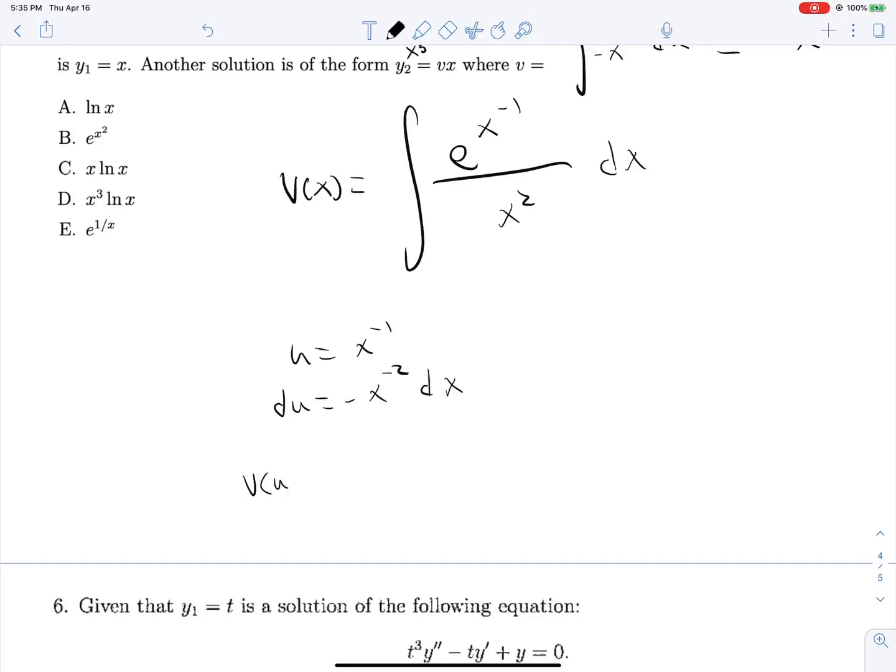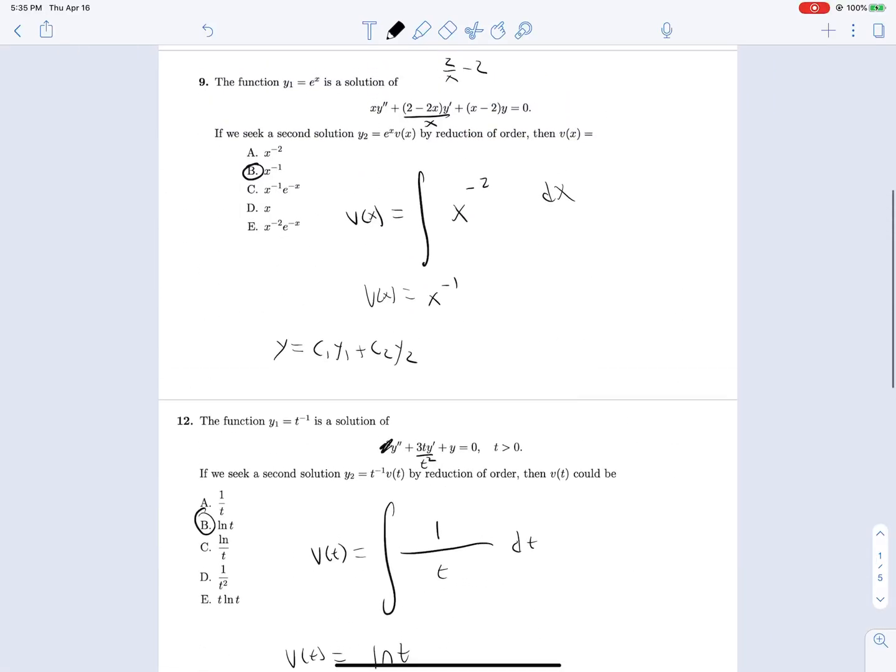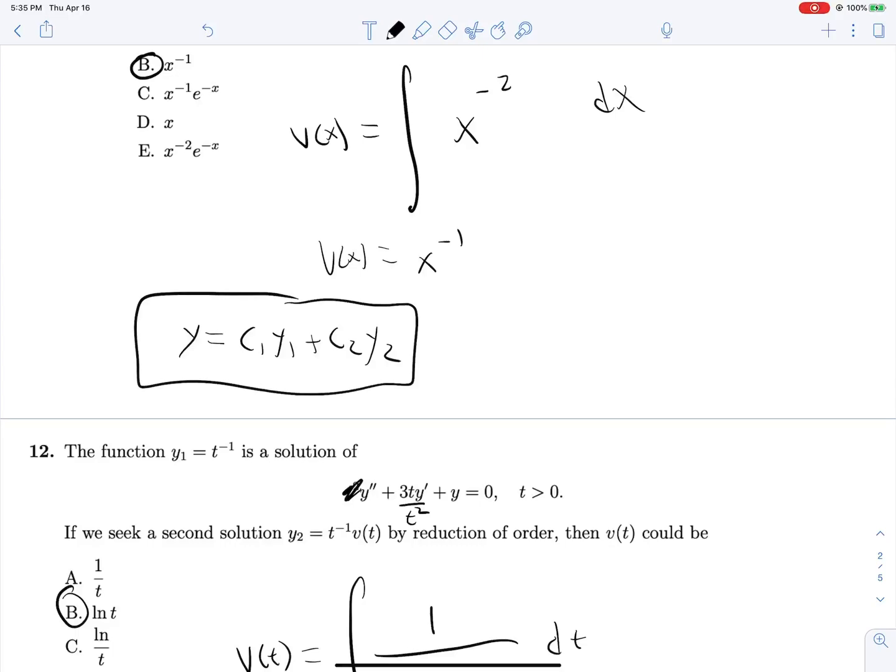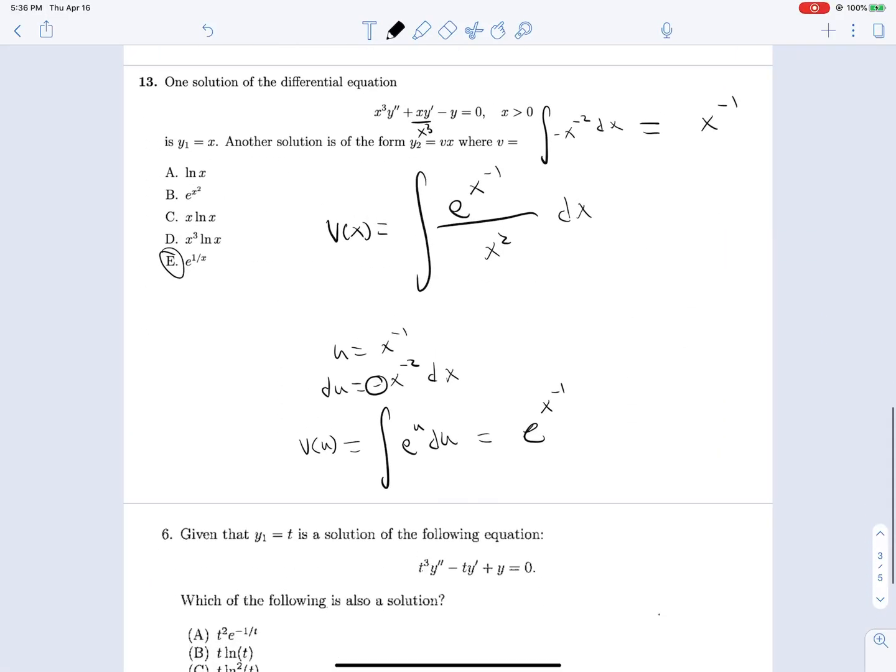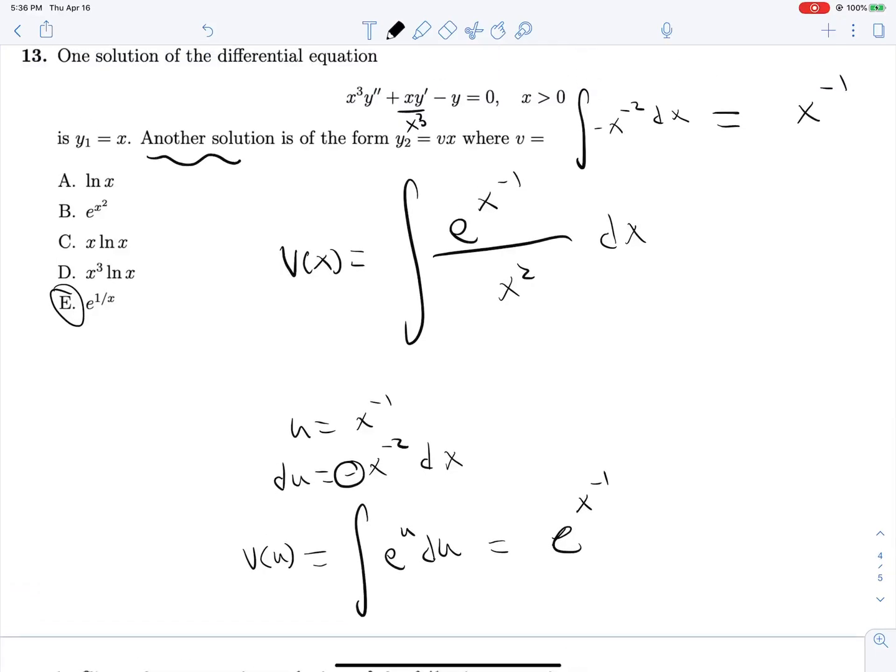we see that v of u is equal to the integral of e to the u du, or just e to the x to the negative first power, or e to the 1 over x. And, you know, you might be wondering where this negative went. Well, same story as up here, we end up multiplying it by some constant, so we can disregard the sign in here, because all they're looking for is another solution, one of the many possible. These just happen to be all of the ones with a constant of 1 outside of them.